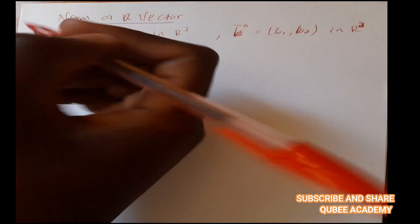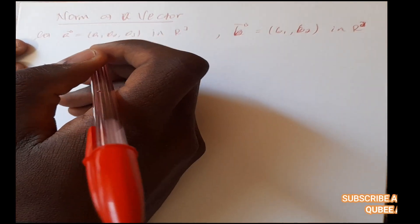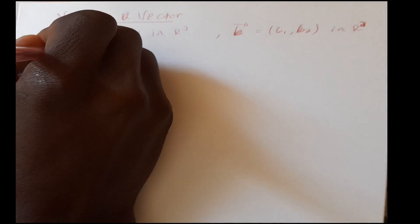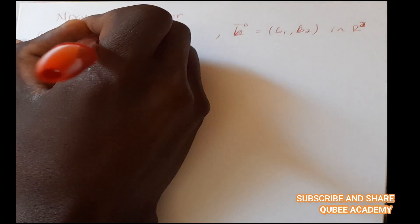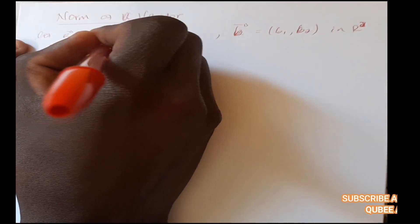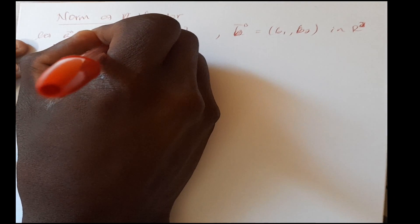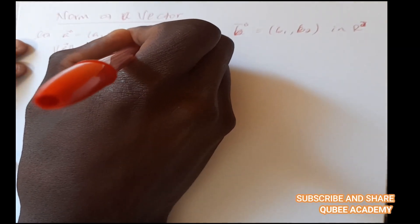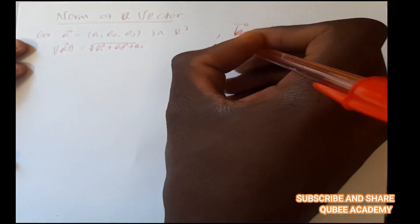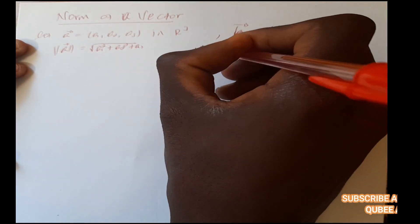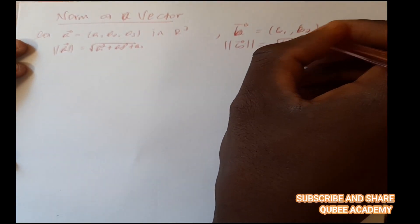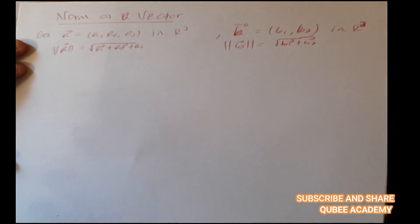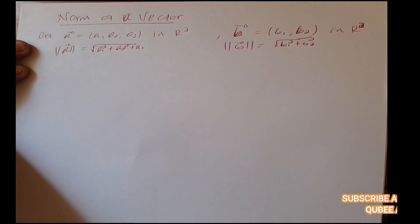The norm is the magnitude, the length of a vector. The norm of vector a is equal to the square root of a1² plus a2² plus a3².